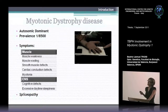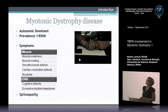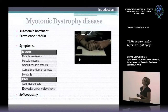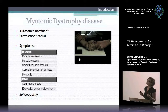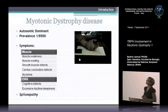In muscle, wasting and myotonia are the main symptoms. One of the tests to measure myotonia is the inability to relax muscles after contraction. You ask the patient to close their hands and then measure how long it takes to open the hands again.